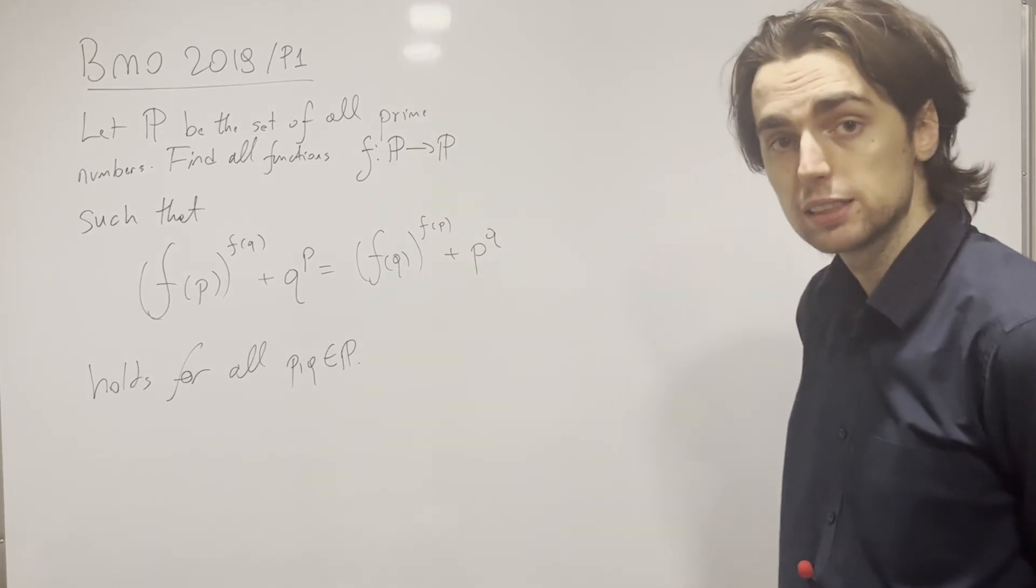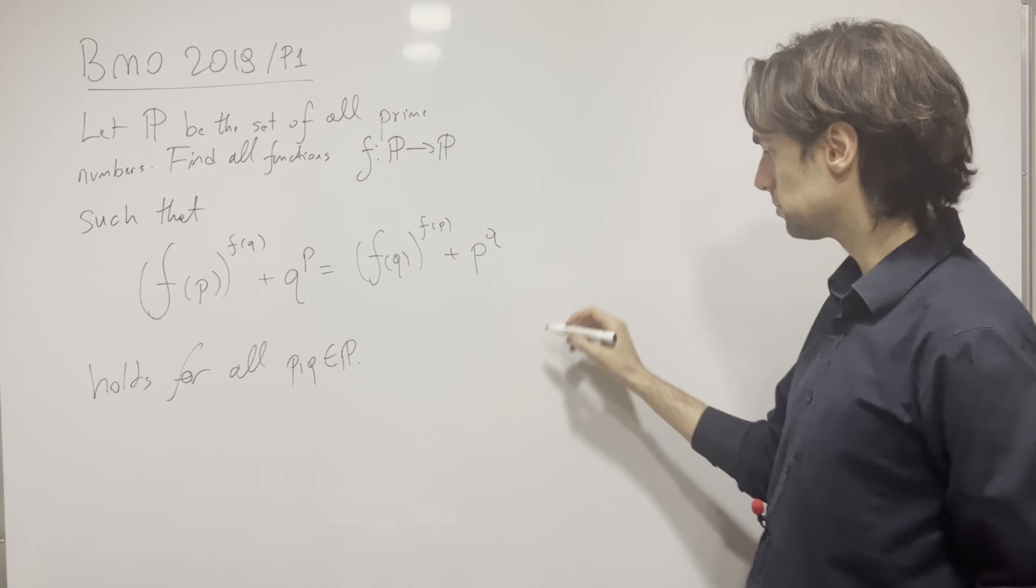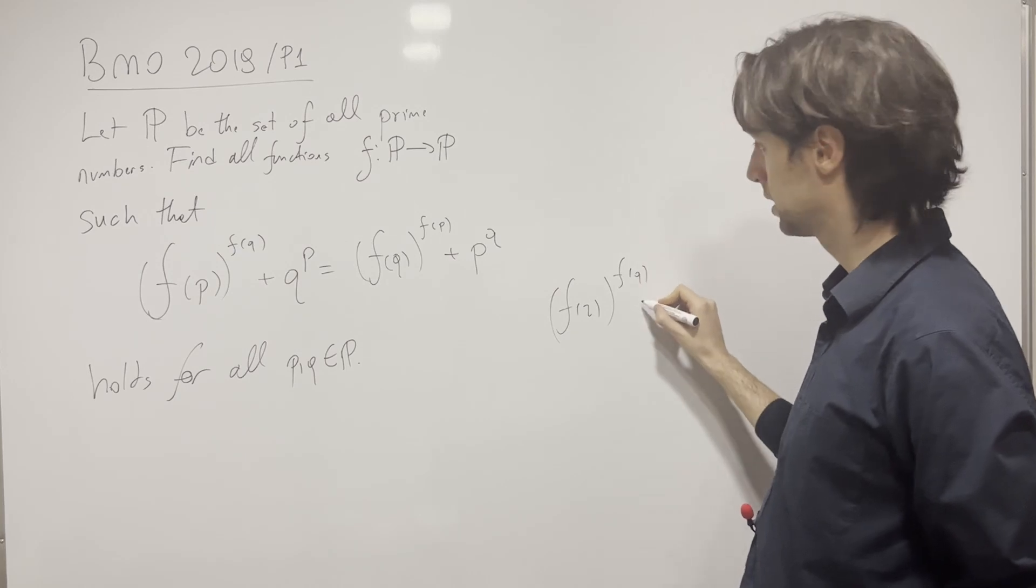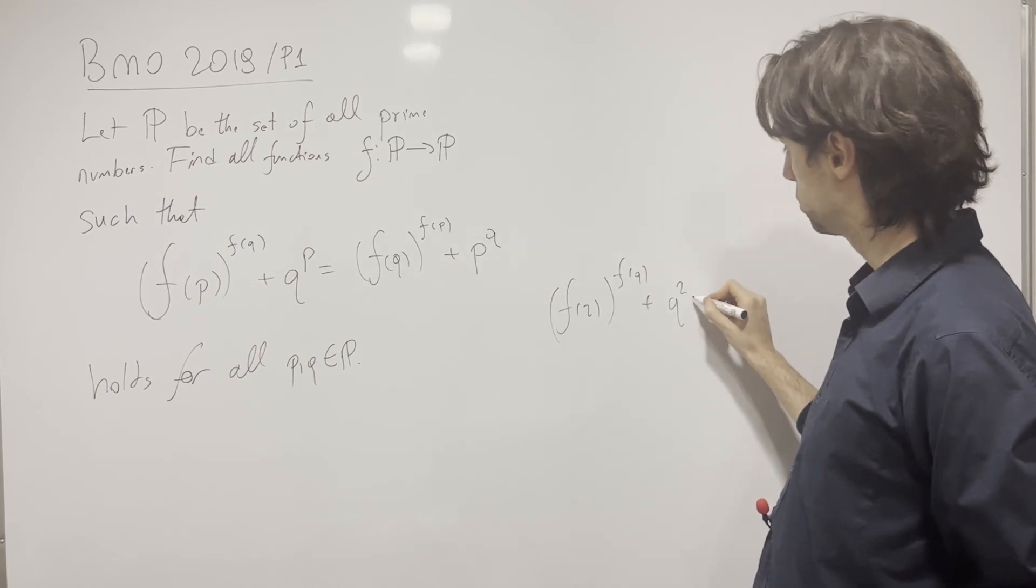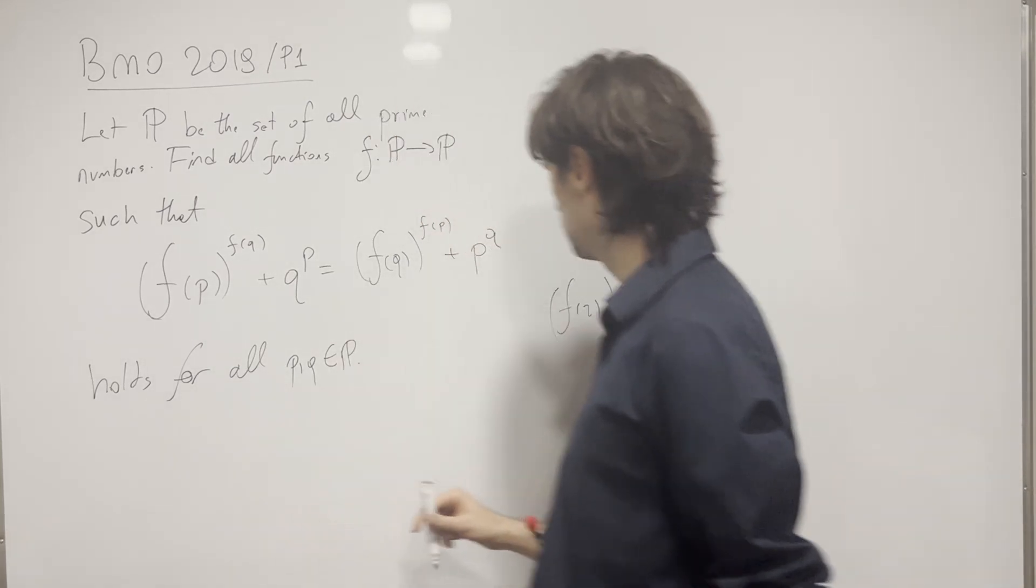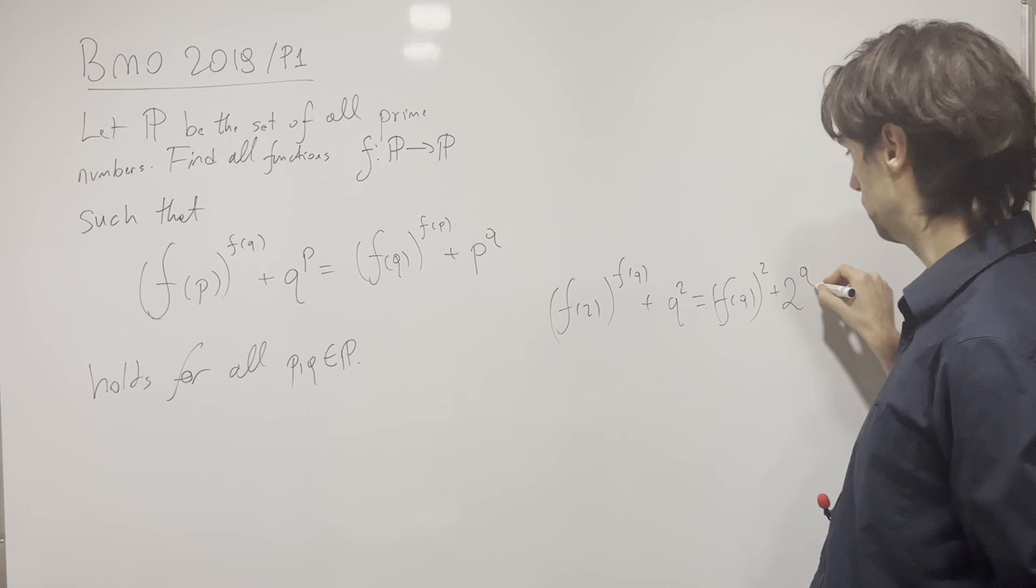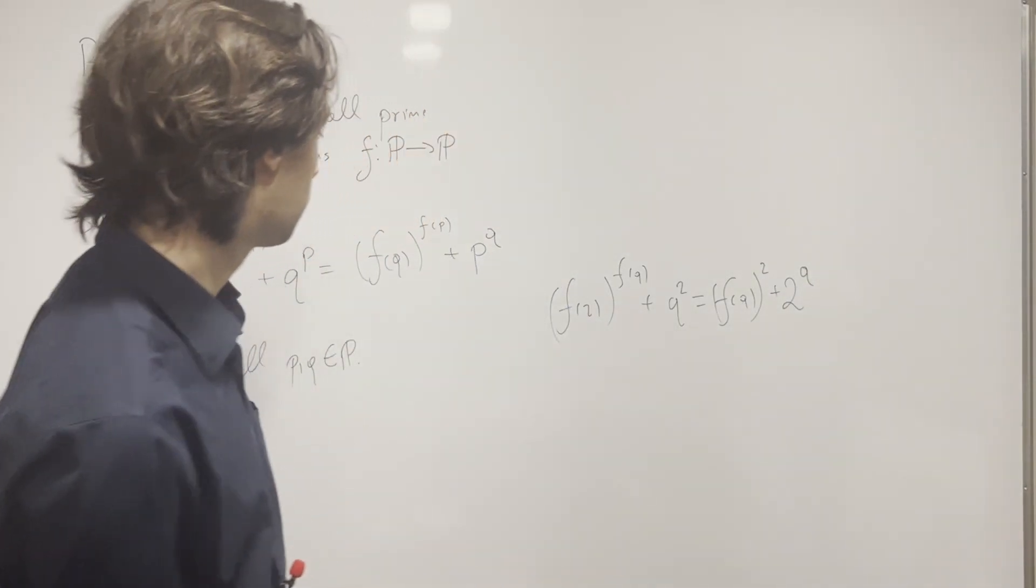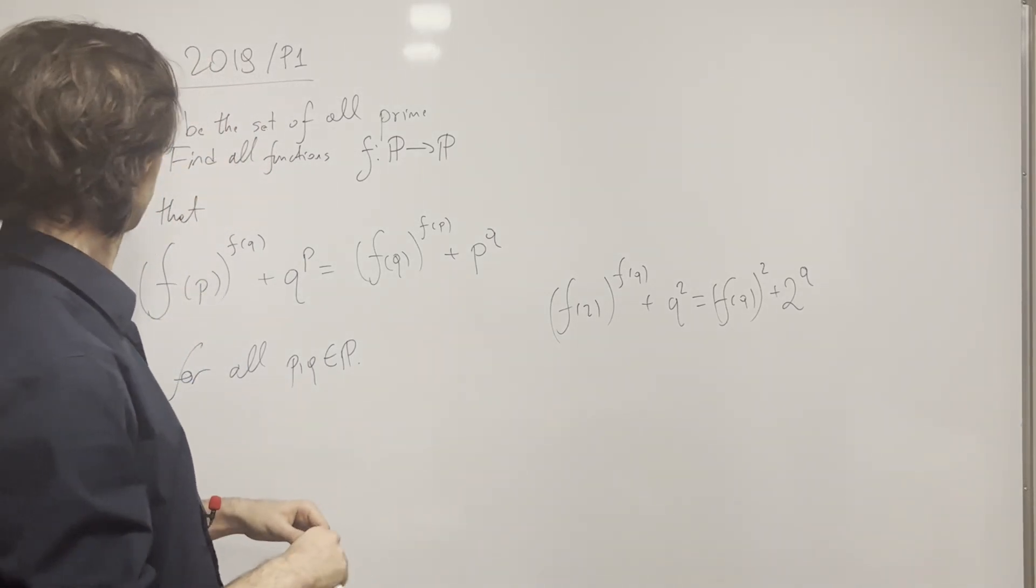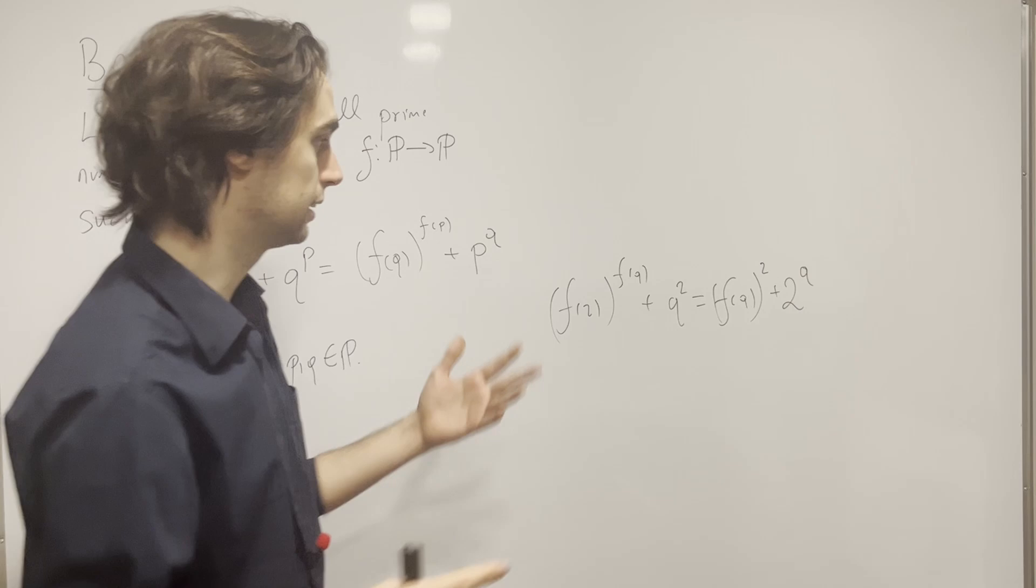If I don't know what I'm going to do, let me plug in some values, maybe some smaller values to see what happens. Say if I plug in p = 2, I'll get f(2)^(f(q)) + q^2 = f(q^2) + 2^q. I just realized, why don't I plug in p = q? Everything will cancel out if we plug in p = q, so it doesn't make sense to plug in values that are the same.